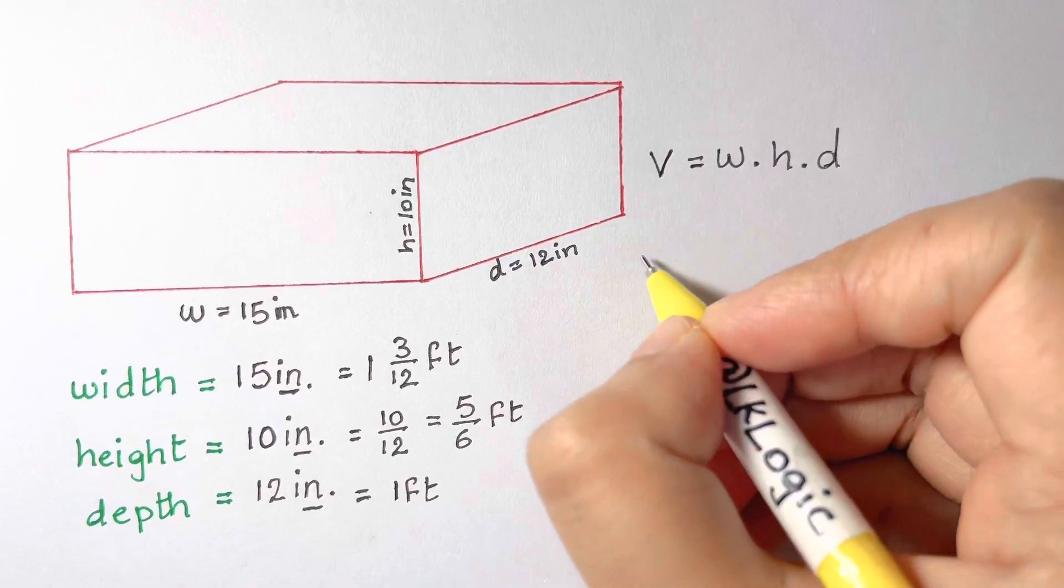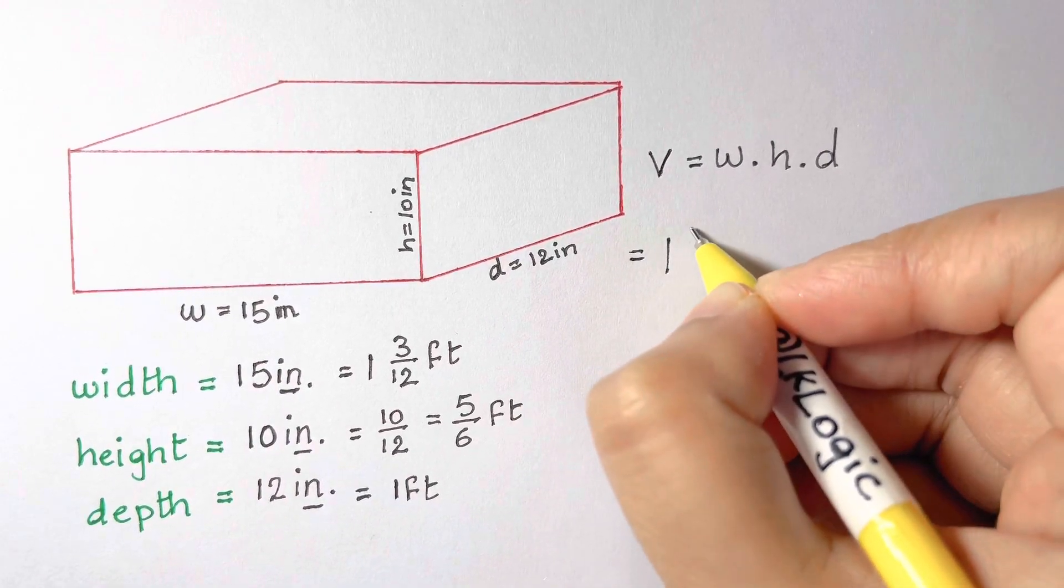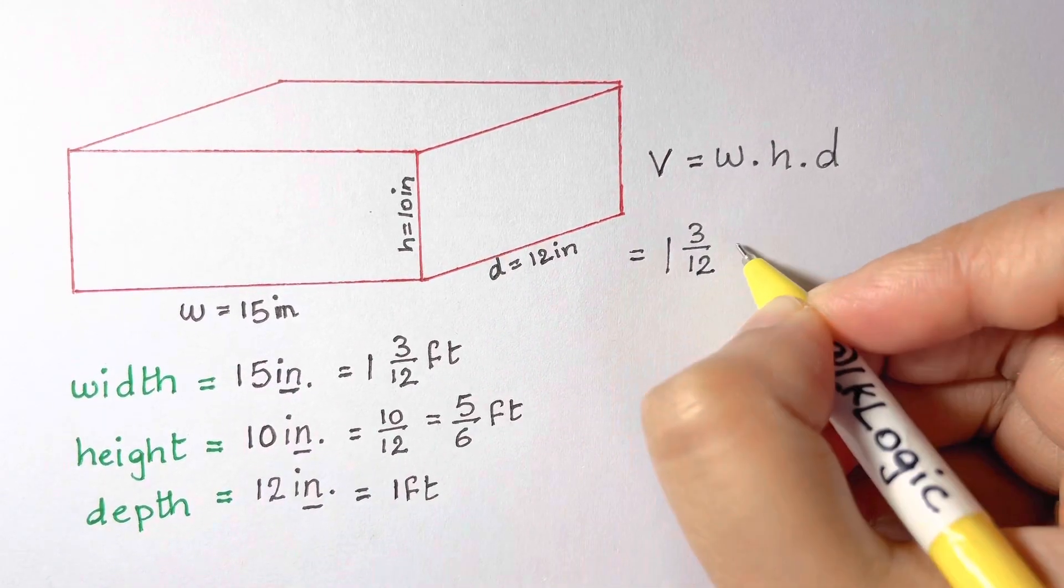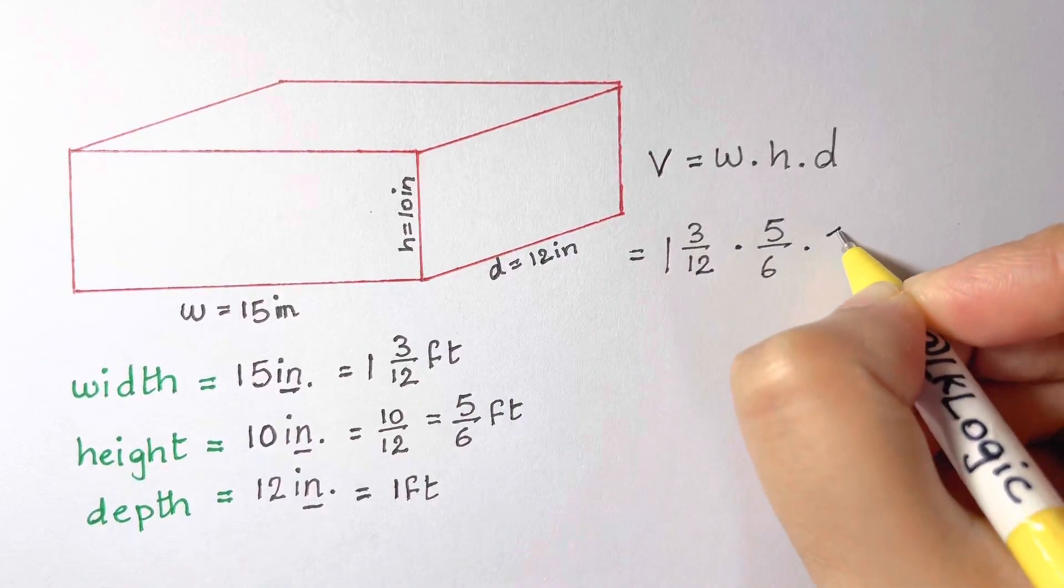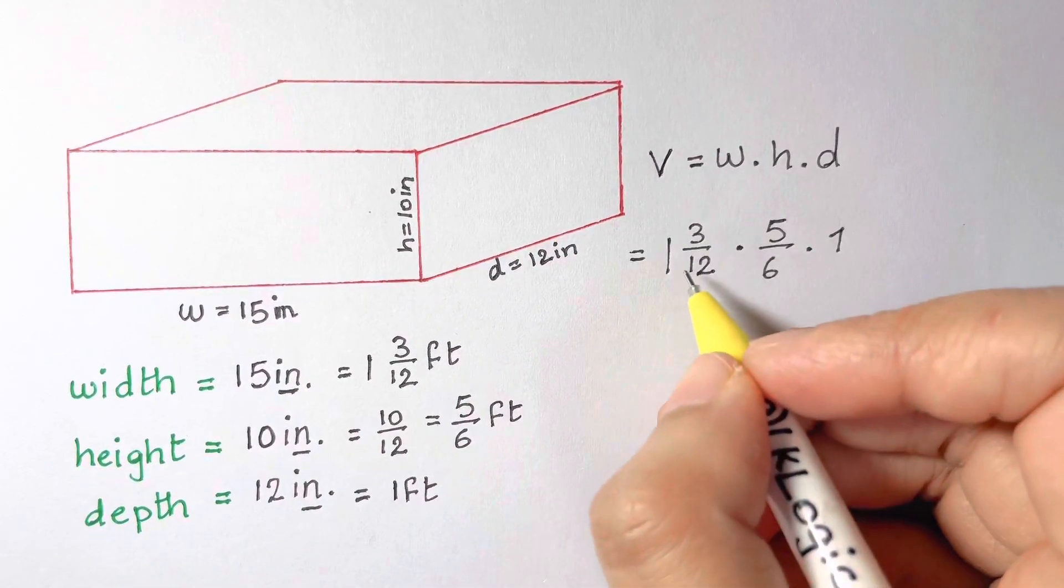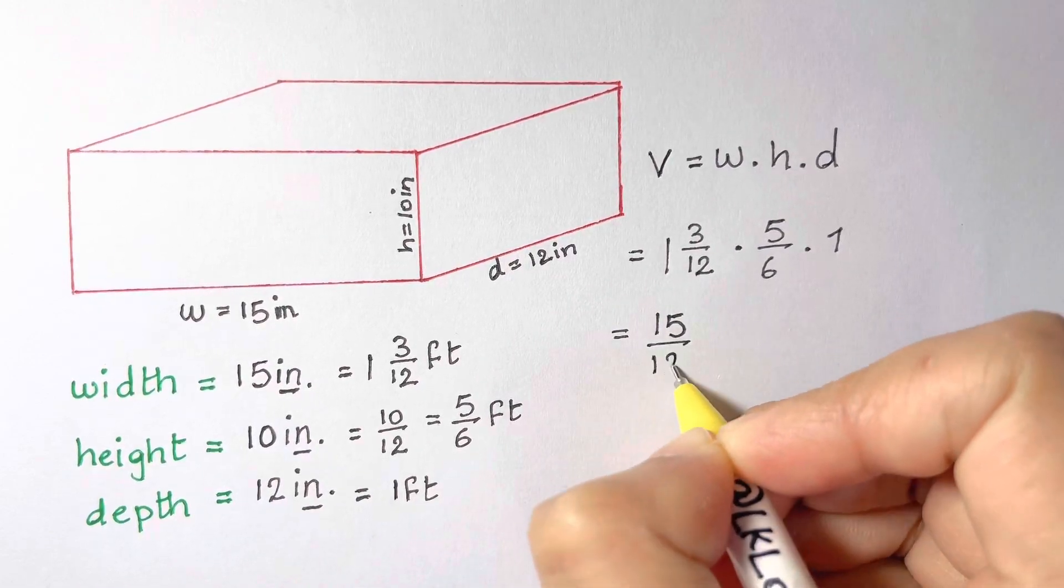So to find the volume of this object, we need to multiply one and three twelfths times five sixths times one. If I change this mixed number to 15 over 12, that will make it easier to multiply.